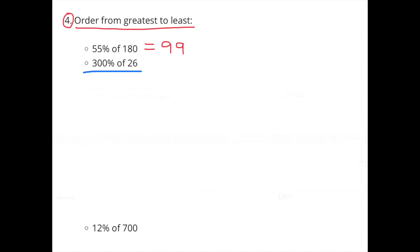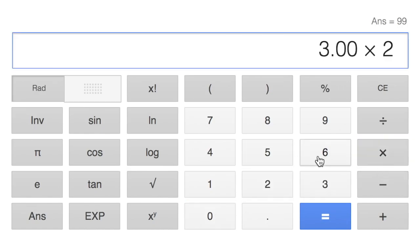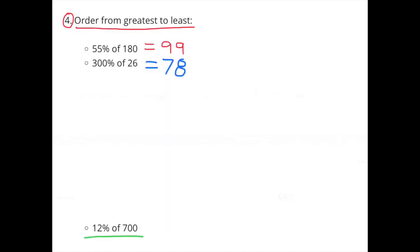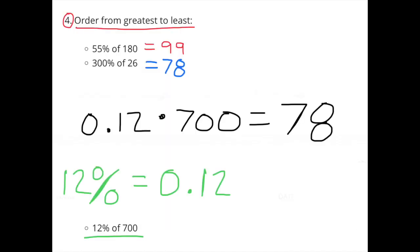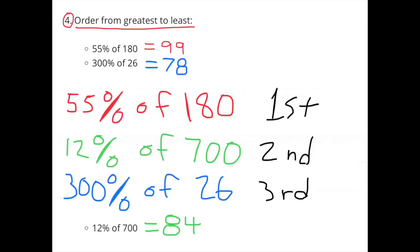Number 4. Order from greatest to least. 55% of 180. 55% times 180 equals 99. 300% of 26. 3 times 26 equals 78. 300% of 26 is 78. Looking down here at the bottom, we see 12% of 700. 12% times 700 equals 84. 12% of 700 equals 84. First, you have 55% of 180, second, you have 12% of 700, and third, you have 300% of 26.